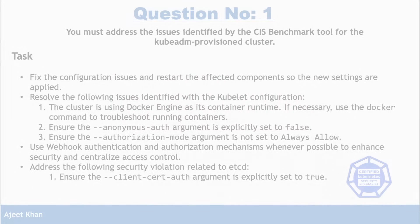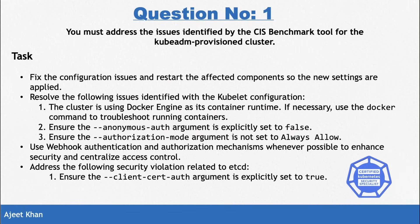Let's dive into question number one. The task is to fix all issues via configuration and restart the affected components to ensure the new settings take effect. We need to fix the following violations found against the kubelet: ensure the anonymous auth argument is set to false, ensure the authorization mode argument is not set to always allow, and use webhook authentication and authorization wherever possible.